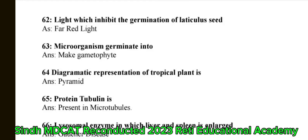Question 62: Light which inhibits the germination of lettuce seed — the correct answer is far red light. Question 63: Microspores germinate into — the correct answer is male gametophyte. Question 64: Diagrammatic representation of a trophic level is — the correct answer is pyramid. Question 65: Protein tubulin is present in microtubules.